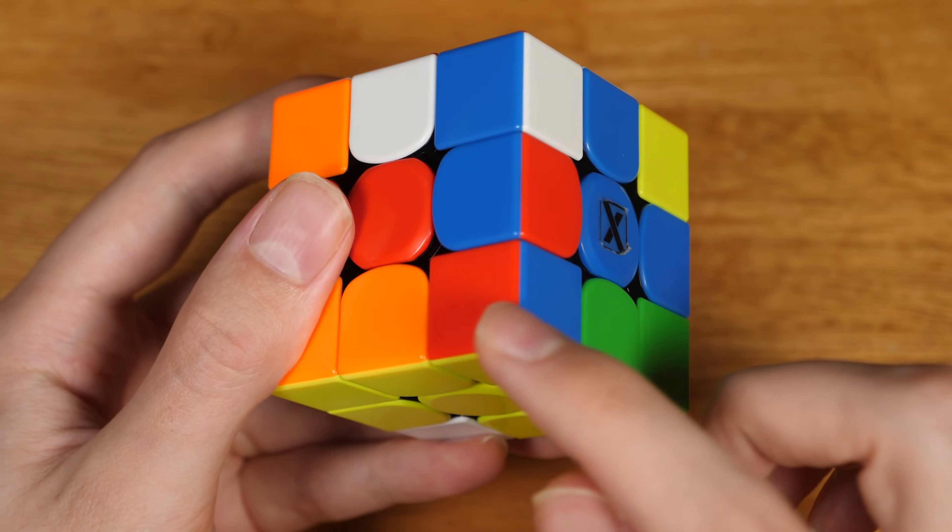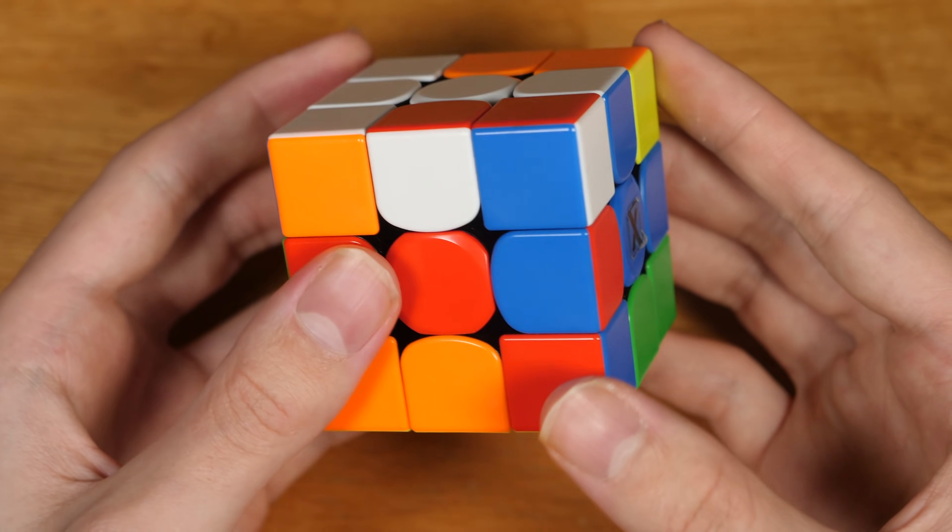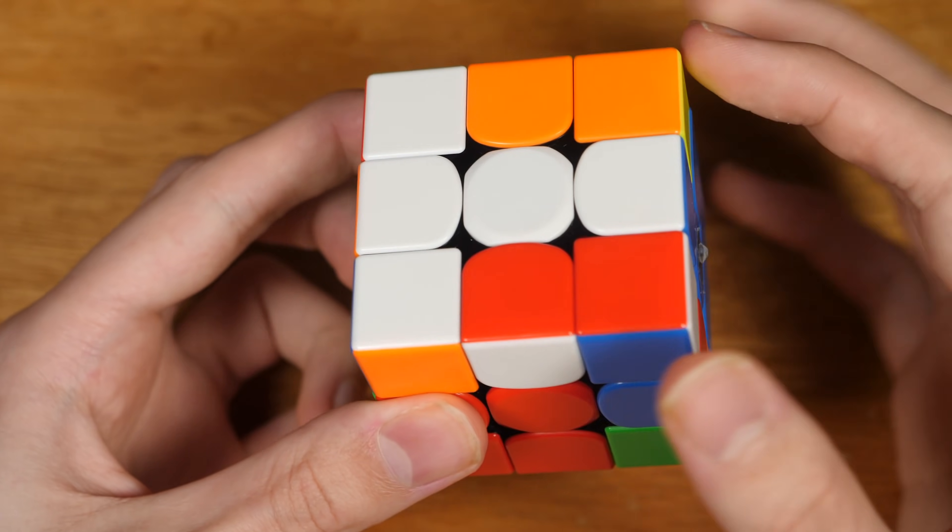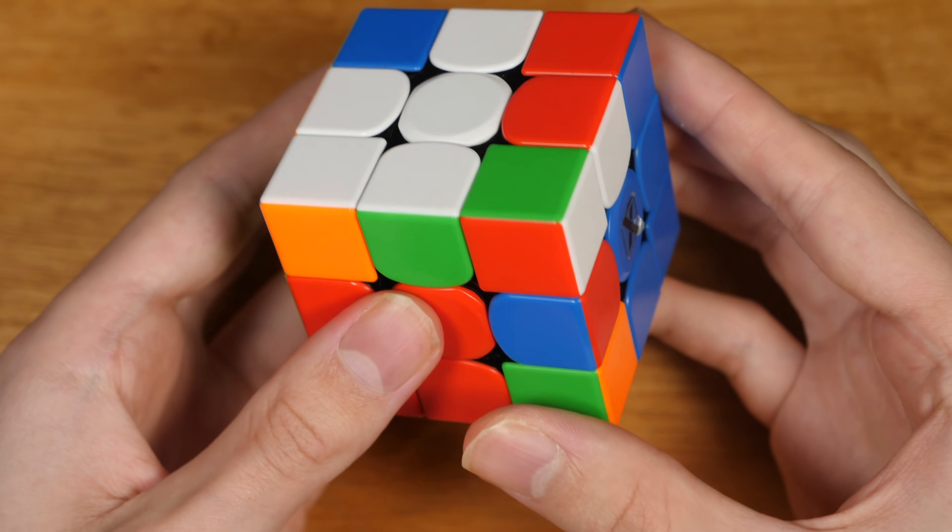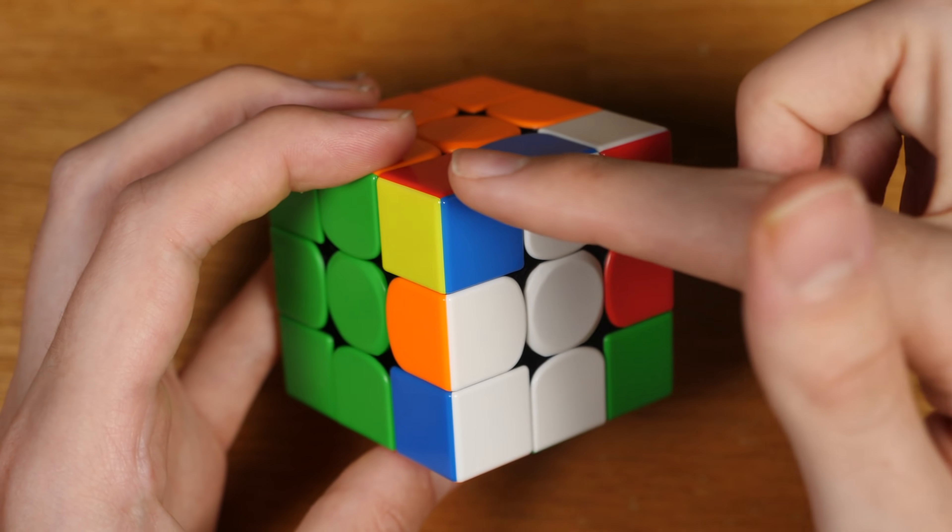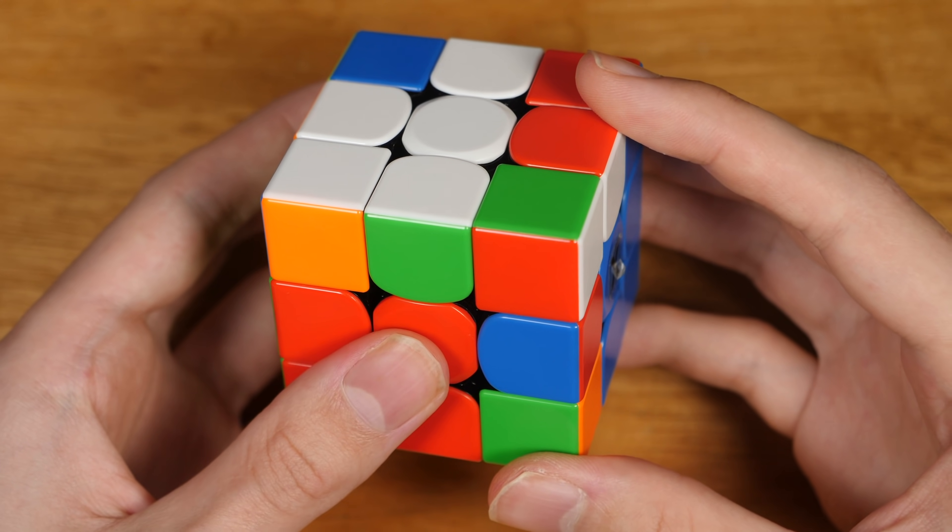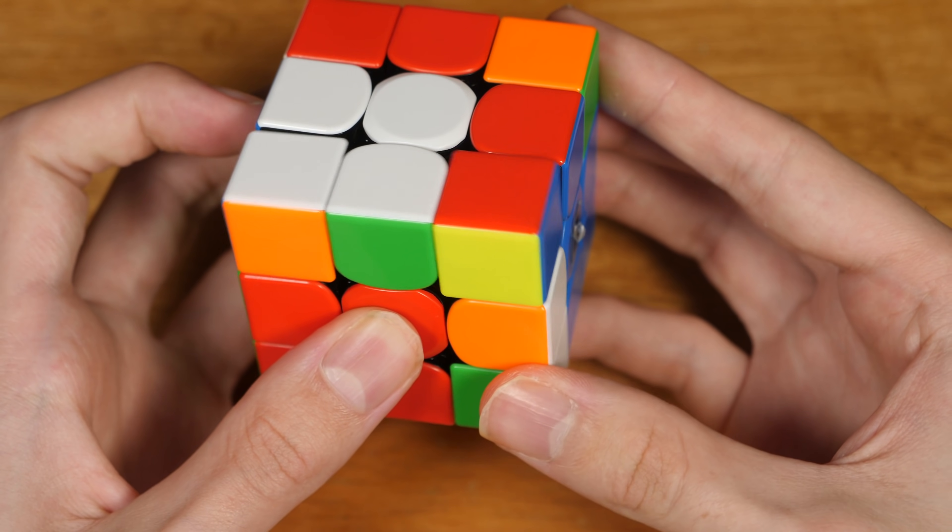So all we're going to have to track is this red-blue corner, and from this position, you can track that it will end up over here when you insert this pair into the back. And then, in inspection, you could have planned, with the relative position of these two, the final solution of the pair.